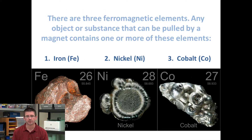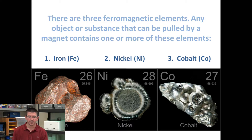The three major ferromagnetic elements that we talk about are iron, nickel, and cobalt. These ferromagnetic objects will be attracted to any magnet.